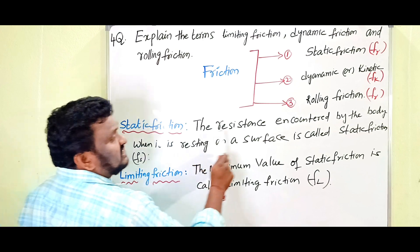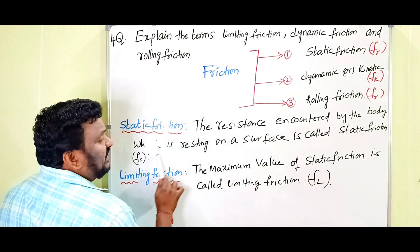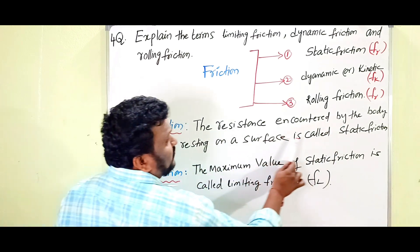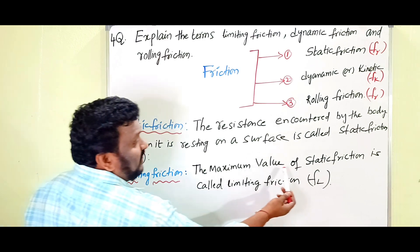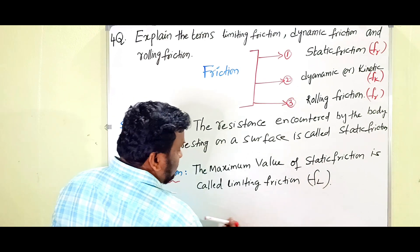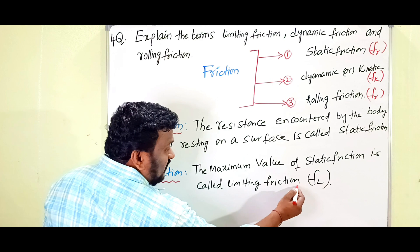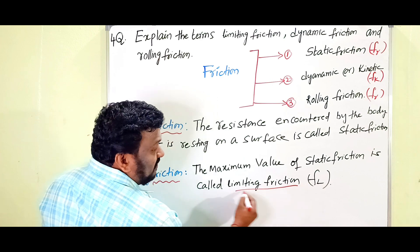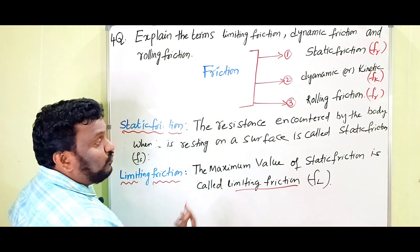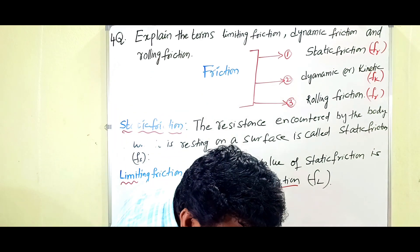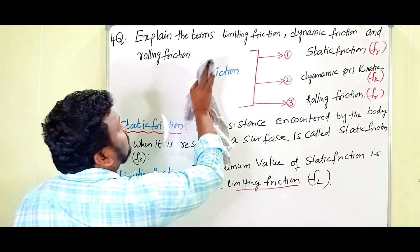The resistance encountered by the body when it is resting on a surface is called static friction. The maximum value of static friction is called limiting friction. So limiting friction is nothing but the maximum value of static friction.